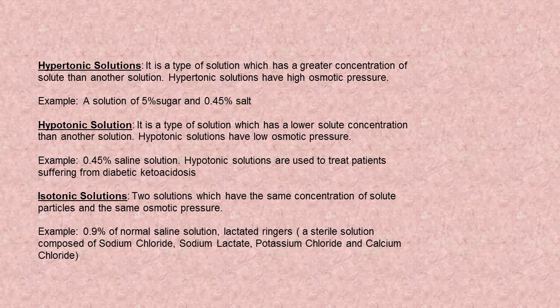Hypertonic solution: it is a type of solution which has a larger concentration of solute than another solution. Hypertonic solutions have high osmotic pressure. For example, a solution of 5% sugar and 0.5% salt. Hypotonic solution: it is a type of solution which has a lower solute concentration than another solution. Hypotonic solutions have low osmotic pressure. For example, 0.5% saline solution. Hypotonic solutions are used to treat patients suffering from diabetic ketoacidosis.